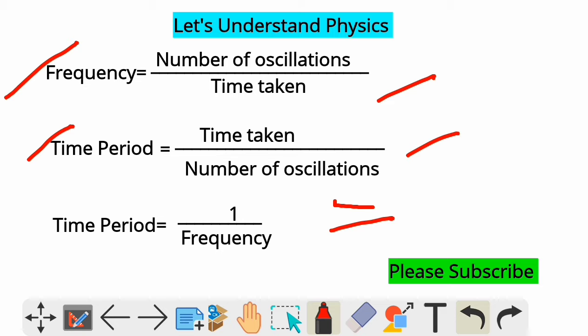If you have not watched the first video, I will give link in the description. Please watch it. In both the formulae, you have physical quantities, number of oscillations and time taken. Frequency, number of oscillations in numerator but time period it is in denominator. In the same way, time taken for frequency in denominator, for time period it is in numerator. So, if you just reciprocate this formula of frequency, you will get time period formula.